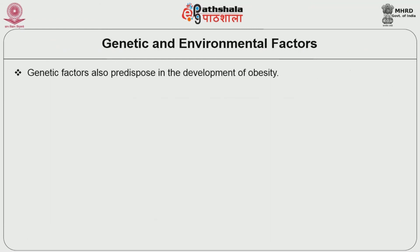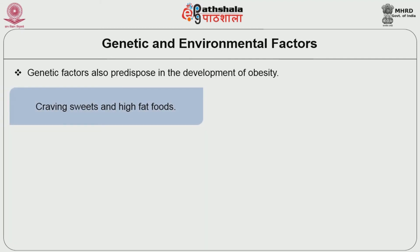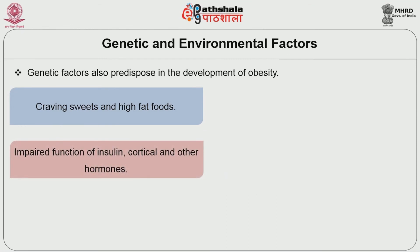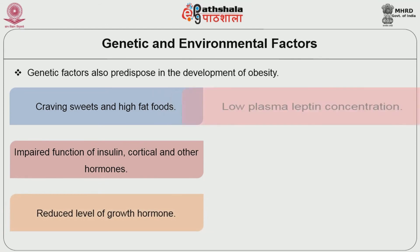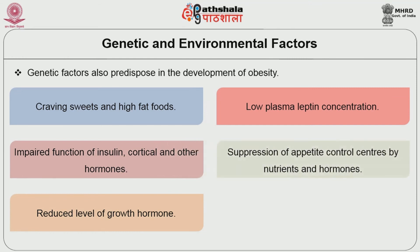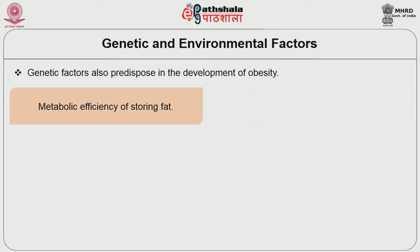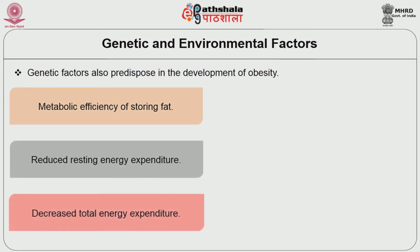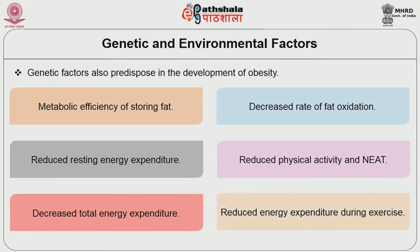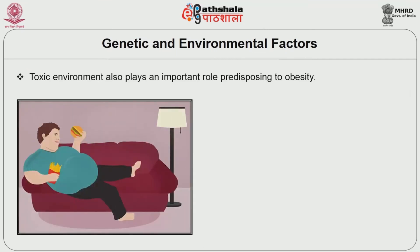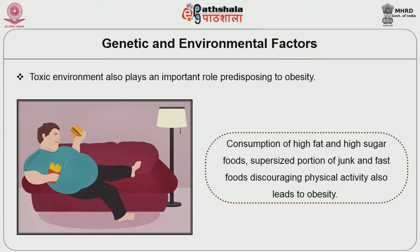Genetic and environmental factors also predispose to the development of obesity. These include craving for sweets and high-fat foods, impaired function of insulin, cortisol and other hormones, reduced level of growth hormone, low plasma leptin concentration, suppression of appetite control centers by nutrients and hormones, large number of fat cells, metabolic efficiency of storing fat, reduced resting energy expenditure, decreased total energy expenditure, decreased rate of fat oxidation, reduced physical activity, and reduced energy expenditure during exercise. A toxic environment also plays an important role, including consumption of high-fat and high-sugar foods and super-sized portions of junk and fast foods, discouraging physical activity.